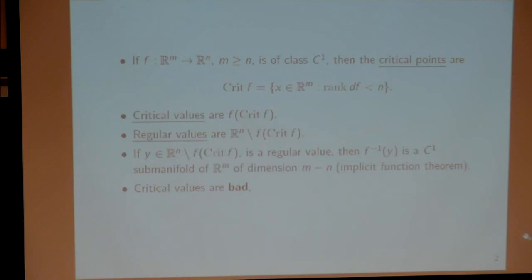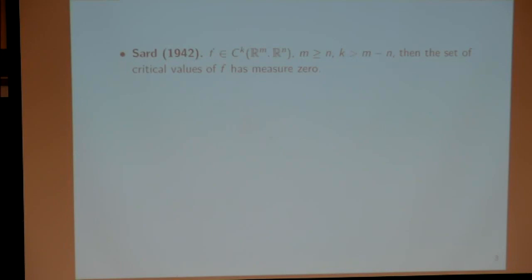What does it mean to be a regular value? If we have a regular value, then at every point of the preimage the rank of the derivative equals n, and we can apply the classical implicit function theorem to conclude that the preimage of every regular value is a nice submanifold of dimension m minus n. So critical values are bad—we don't want them—and regular values are nice. We want the set of critical values to be small.